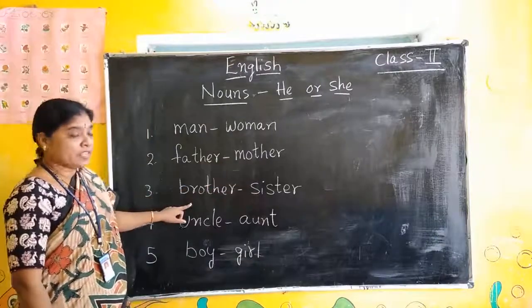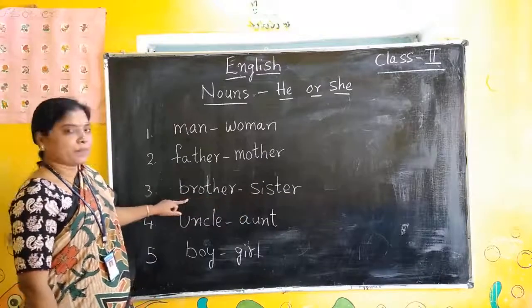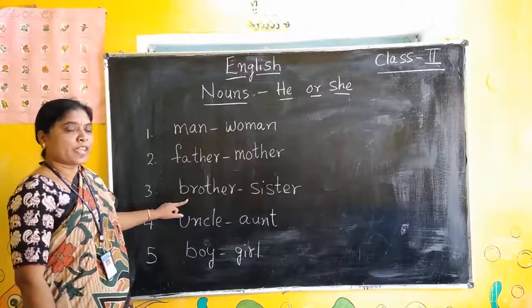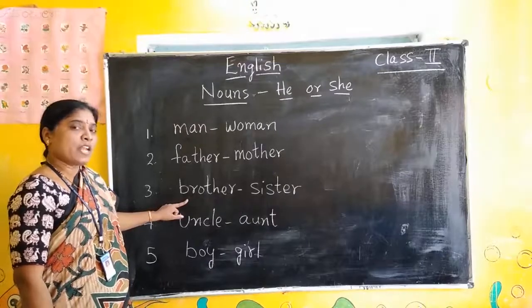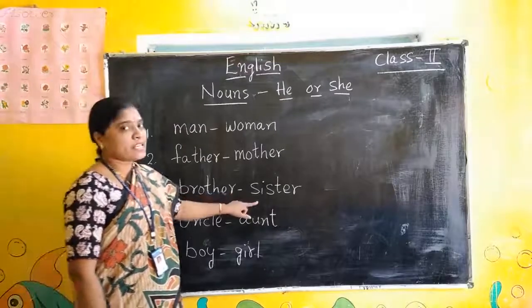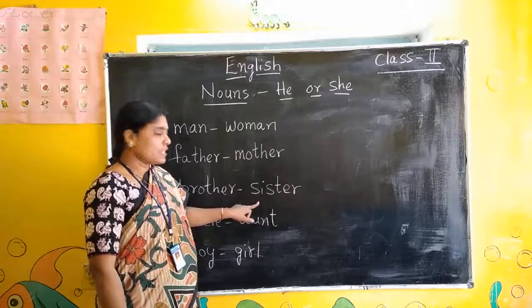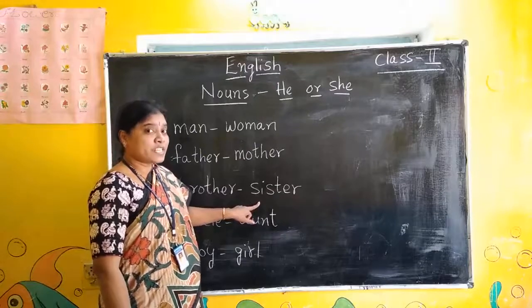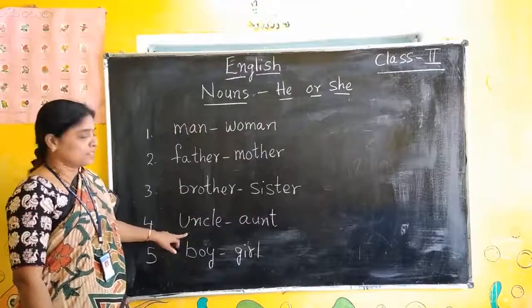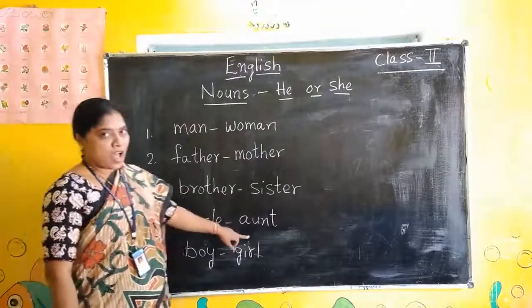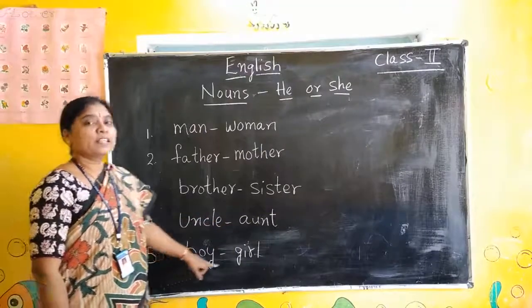Brother, sister. Your brother, younger or elder, is called he. Sister, younger or elder, is called she. Uncle. Aunt. Boy. Girl.